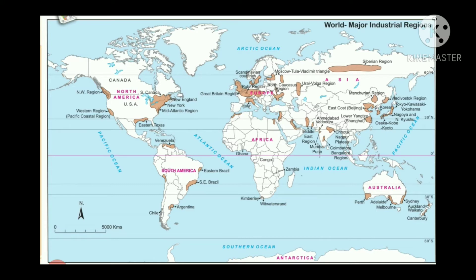Industries are located all over the world. For example, mineral-based industries are located nearby the mines, agro-based industries nearby agriculture areas, pharmaceutical industries nearby the urban or fringe areas, and cottage industries where people are working from their houses, making goods and selling into the market. All these different types of industries are located all over the world.